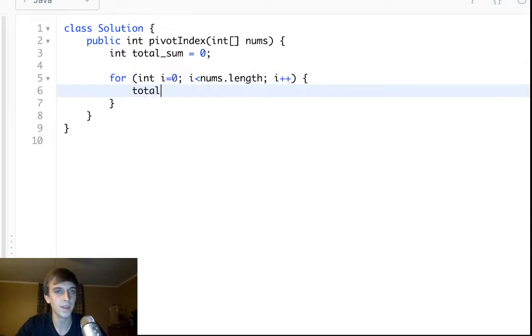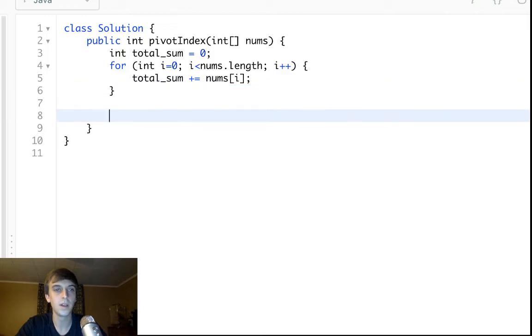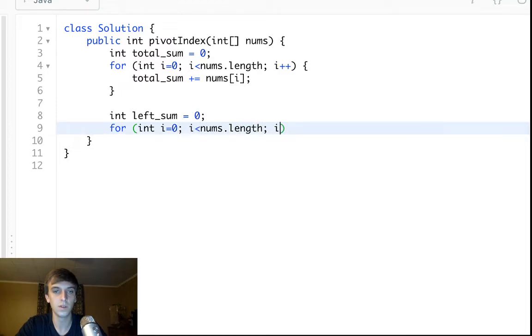So just get the total sum, not too difficult. You've all done a for loop where you add to a sum. Get the left sum, so you go to zero. For int i equals zero, i less than nums length, i plus plus. The same loop.